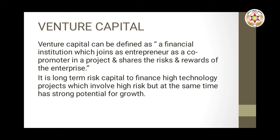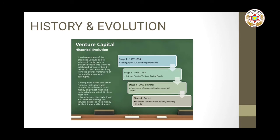Now you can see this diagram showing the history and evolution of venture capital. Stage one, from 1987 to 1994: setting up of TDICI and regional funds. Stage two, 1995 to 1998: entry of foreign venture capital funds. Stage three, 2000 onwards: emergence of successful India-centric venture capital firms. Stage four, current: global venture capitalists and private equity firms actively investing in India.